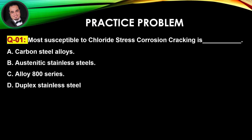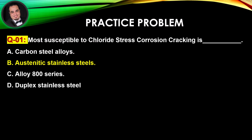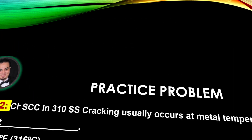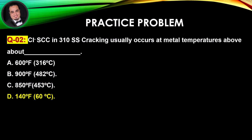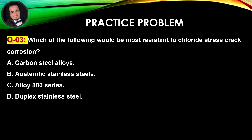Practice time. Question number one: Most susceptible to chloride stress corrosion cracking is — Answer is B. Question number two: Chloride stress corrosion cracking in 310 stainless steel usually occurs at metal temperatures above about — Answer is D. Question number three: Which of the following would be most resistant to chloride stress crack corrosion?